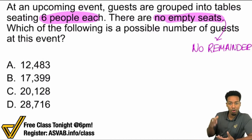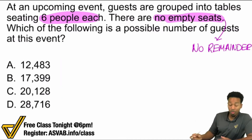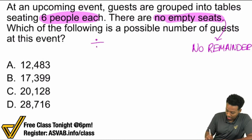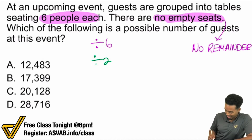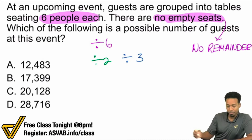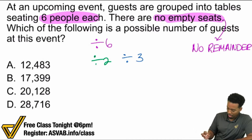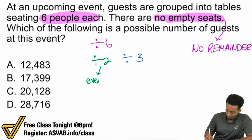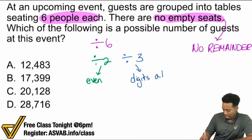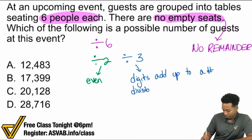Because there's no remainder, that means six perfectly divides into this number. So how do we figure out whether a number is divisible by six? Well, if a number is divisible by six, that's the same as dividing by two and dividing by three. So the rule is: it has to be both divisible by two and by three. A number is divisible by two if it's even, and divisible by three if the digits add up to a number divisible by three.